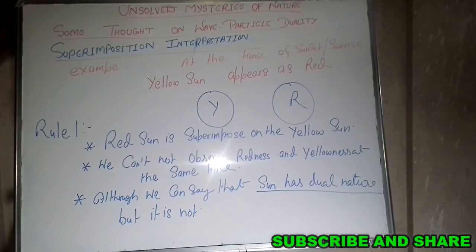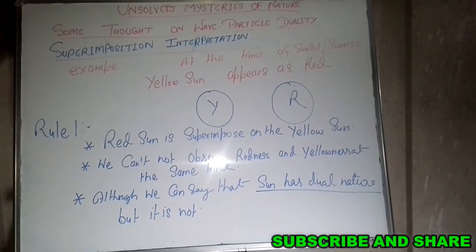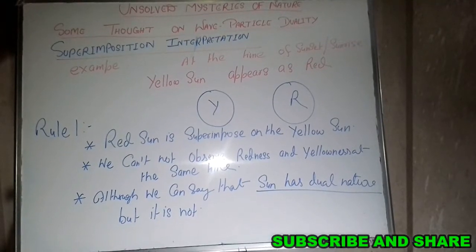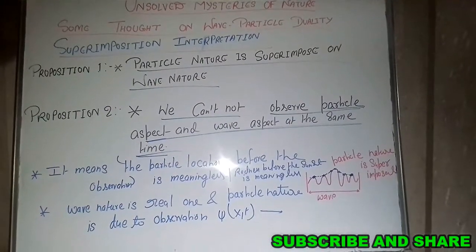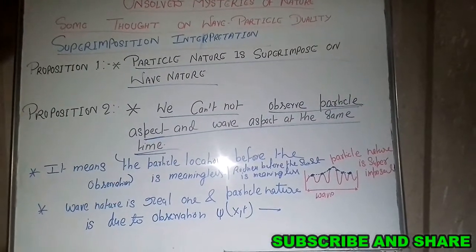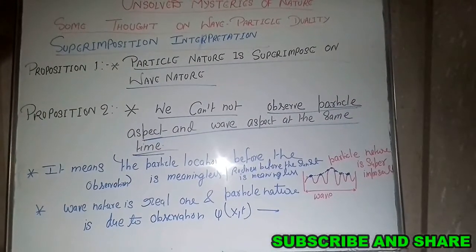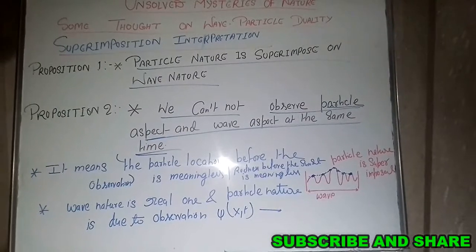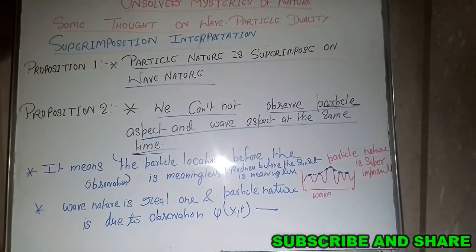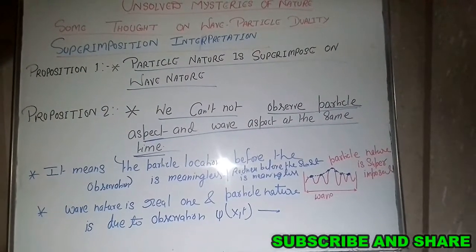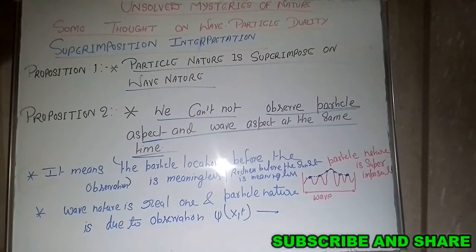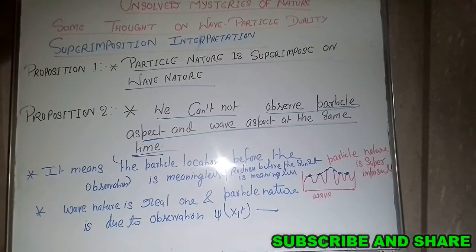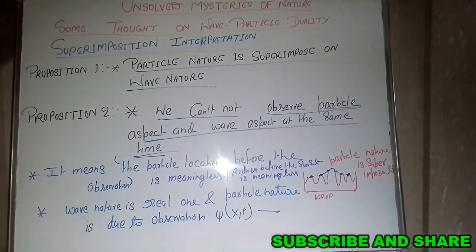Now we apply these three facts to the double slit experiment. According to the superimposition interpretation, we get two propositions. Proposition 1: particle nature is superimposed on wave nature. Proposition 2: we cannot observe the particle aspect and the wave aspect at the same time.